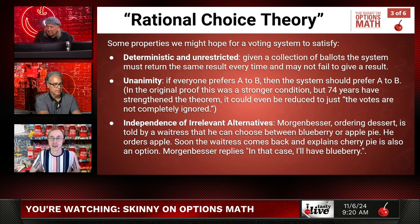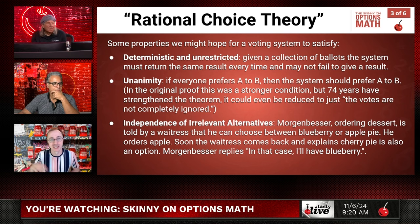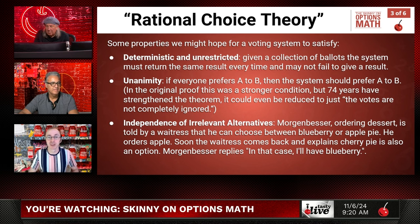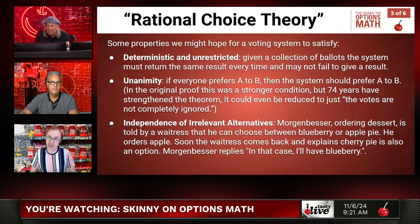The first property is deterministic and unrestricted: given a collection of ballots, the system has to return a result and must return the same result every time. You can't have it say 'there was a cycle in the preferences, so no one wins,' and you can't use randomness. When I first learned this, I raised my hand and asked: what about a system that randomly selects one ballot as the winner? It's fair — no one can hurt any candidate — but a stronger condition is unanimity: if literally every ballot prefers A to B, then the system must output A over B.